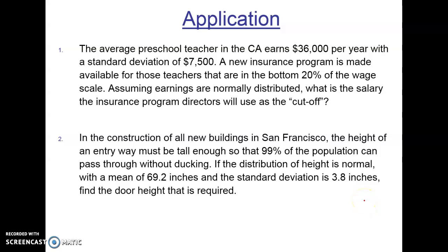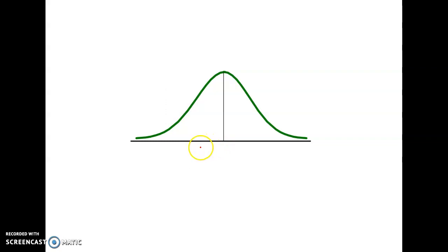Well, again, we're going from Z to X. We've got our mean, we've got our standard deviation. We've been given the percentage that we're going to work with to derive the Z, and with this information, we can get to that height the entryway must be. So this is actually a real-world problem. You may not think about it much, but when they do construct buildings, they have to accommodate a large array of the population, but not everybody. So let's say that 99% of the population has to be able to get through the door without ducking.